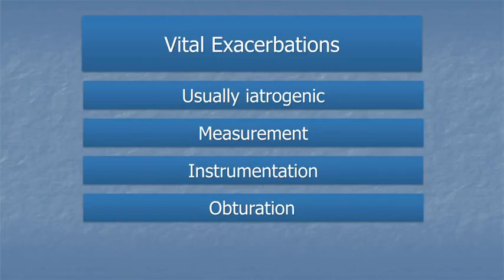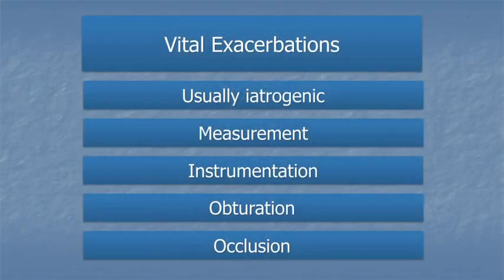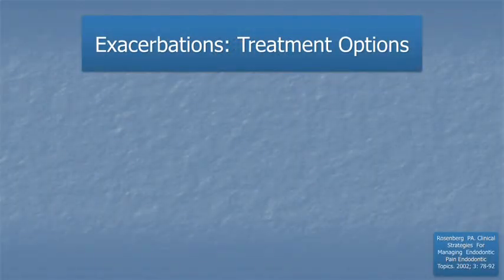Obturation of a tooth that is mildly or moderately symptomatic can lead to acute postoperative pain just because of irritation caused by manipulation. You would be well advised not to obturate a tooth until the patient is asymptomatic. The occlusion is another factor — if the patient leaves with a restoration that is slightly high in occlusion, it can be the cause of severe pain. Good research indicates that if it is possible, you would be well advised to reduce the occlusion.